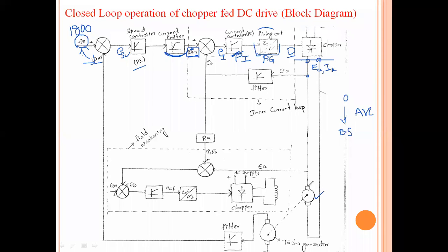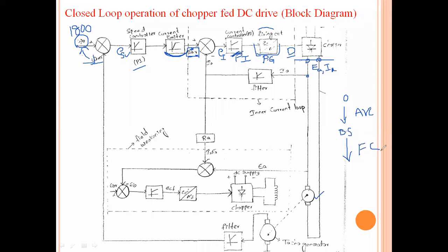If we want to run the motor above the base speed — say above 1500 RPM, which is 1800 RPM — we need the field control technique. Field control technique is used to increase the speed of the machine above the base speed. For that, this field weakening loop is used. Let us now see how this field weakening loop works.